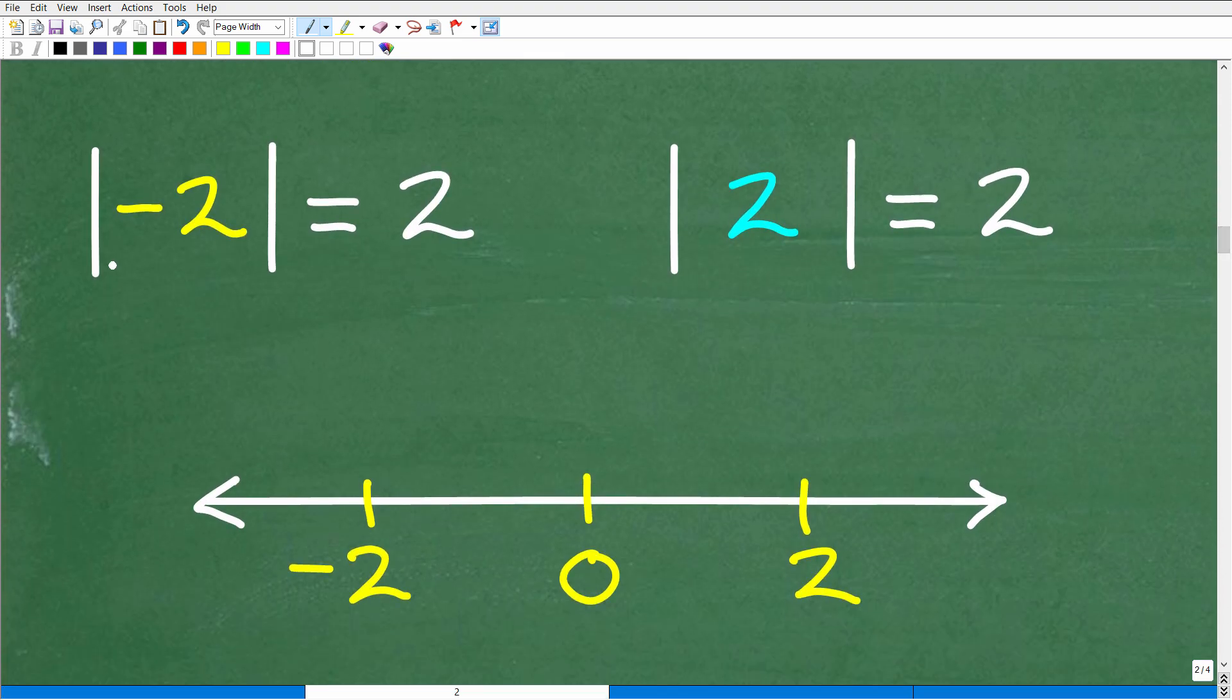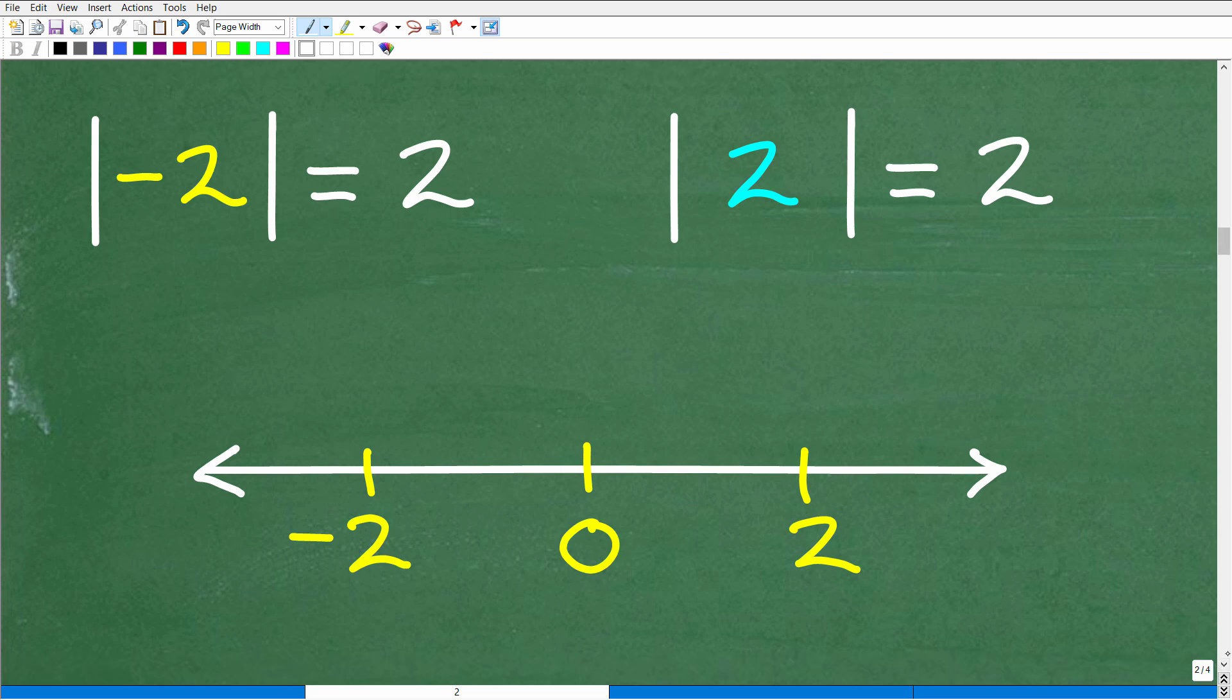Why is it that when we have a problem like this, we have the absolute value of negative 2, the answer is 2, and then the absolute value of positive 2, the answer is 2. Why is that the case? Well, let's take a look at the definition of absolute value.